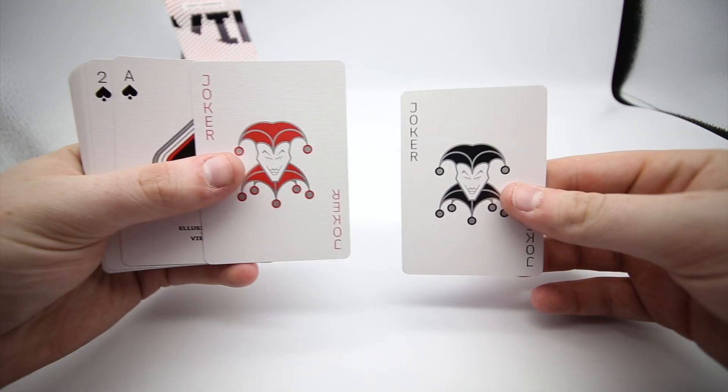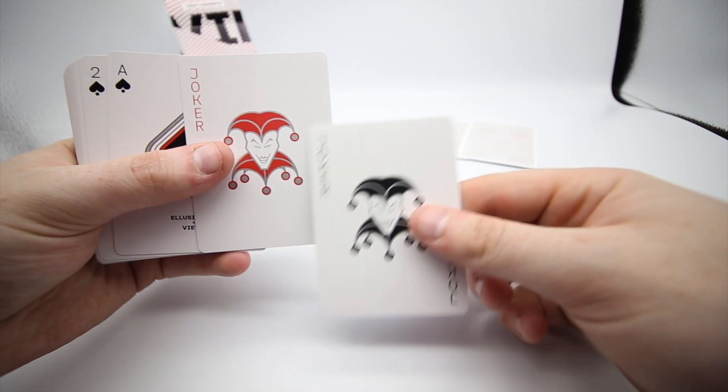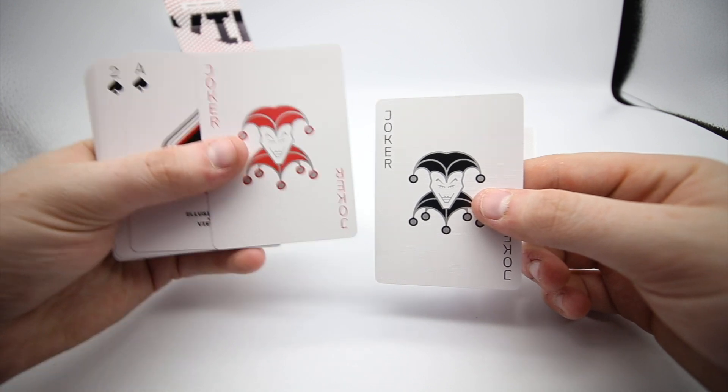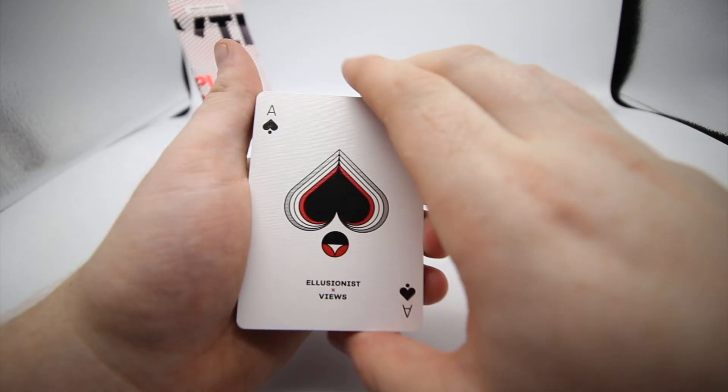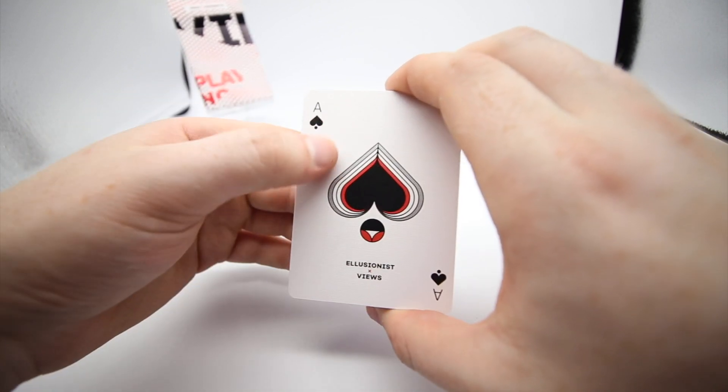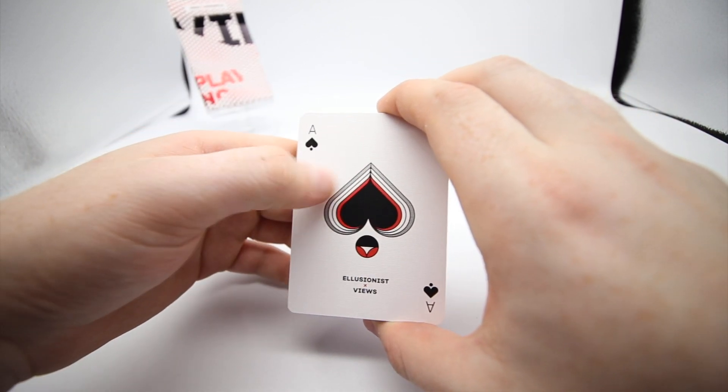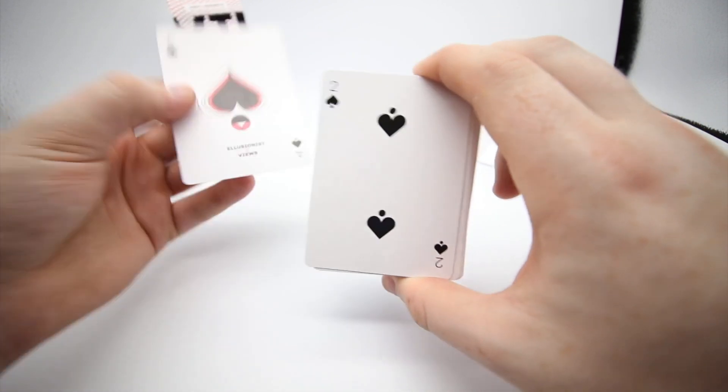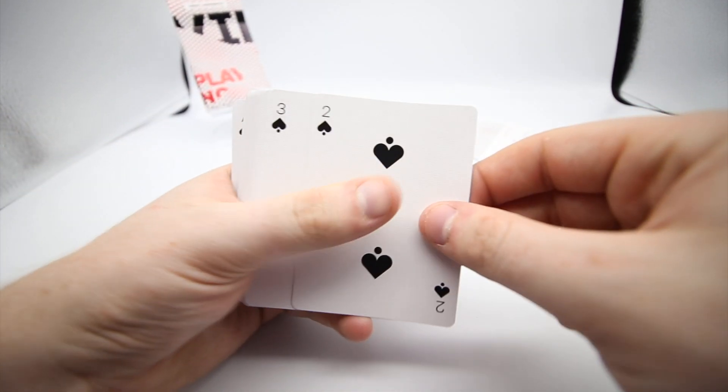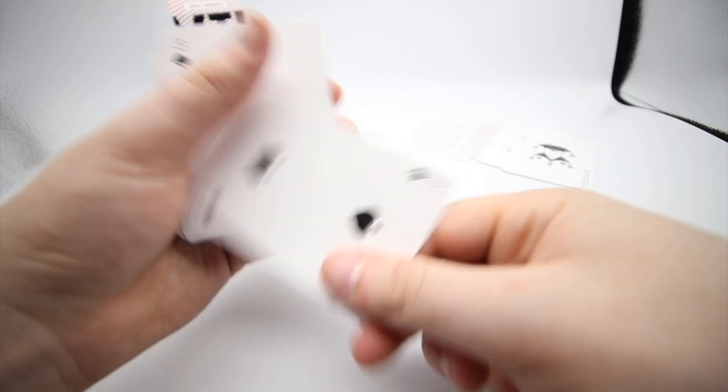You then get the actual jokers—it has 'Joker, Joker' and the cool silver line around it. Then this one has the black ones and red ones in black—really, really cool, simple jokers. You've got the Ace of Spades. It has 'Ace, Ace,' and it has this quite cool gold and red, silver and red. It has 'Illusionist Views,' very nice pips, and the actual font they've used.